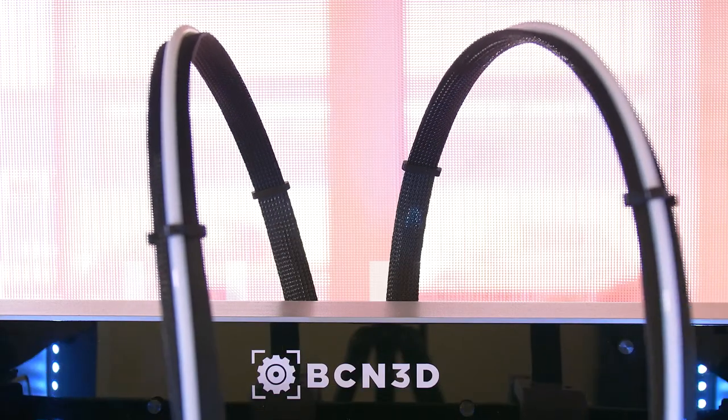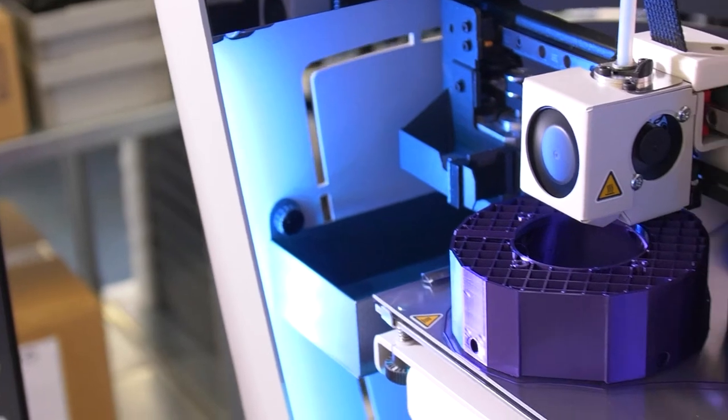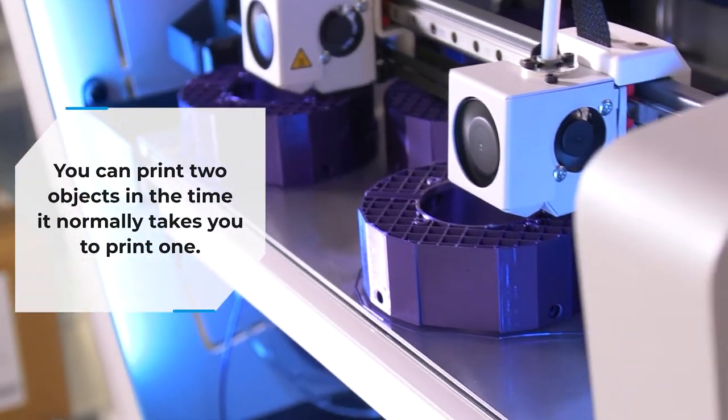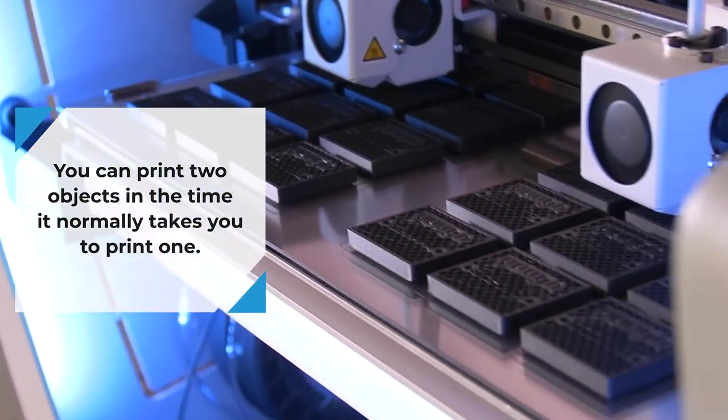We choose the 3D printers of BCN 3D because of the possibility to print in duplication mode. This way you can print two objects in the time that normally takes to print one object, which means that you have two printers for the price of one.